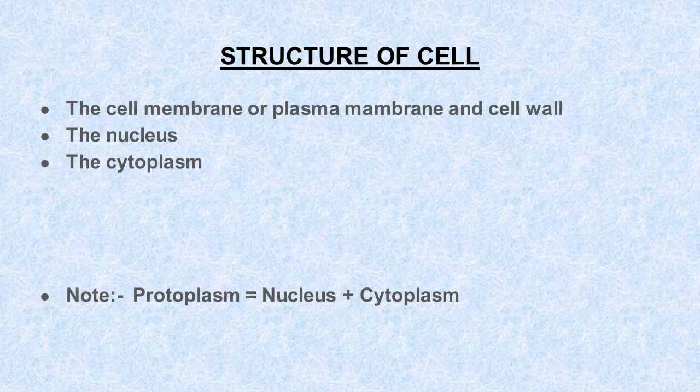Let's come to the next topic: structure of cell. All cells have the following three major functional structures: the cell membrane or plasma membrane and cell wall, the nucleus, and the cytoplasm.